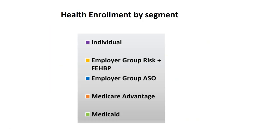Looking at enrollment by segments — there are different segments of insurance policies. For individuals, if you purchase an insurance policy yourself it is considered an individual or private policy. Along with an employer policy, you can also buy an external private insurance policy — for example, if you feel the company-provided coverage is not sufficient. There is also the employer group FEHBP, which covers government employees.